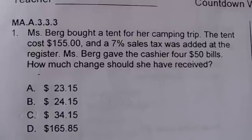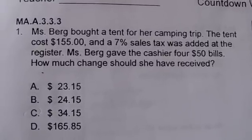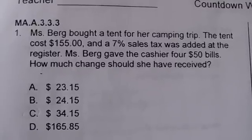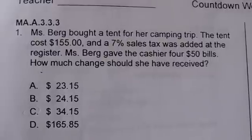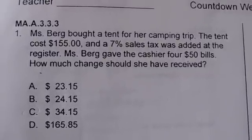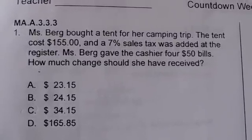The question reads: Mrs. Berg bought a tent for her camping trip. The tent cost $155 and a 7% sales tax was added at the register. Mrs. Berg gave the cashier four $50 bills. How much change should she have received?